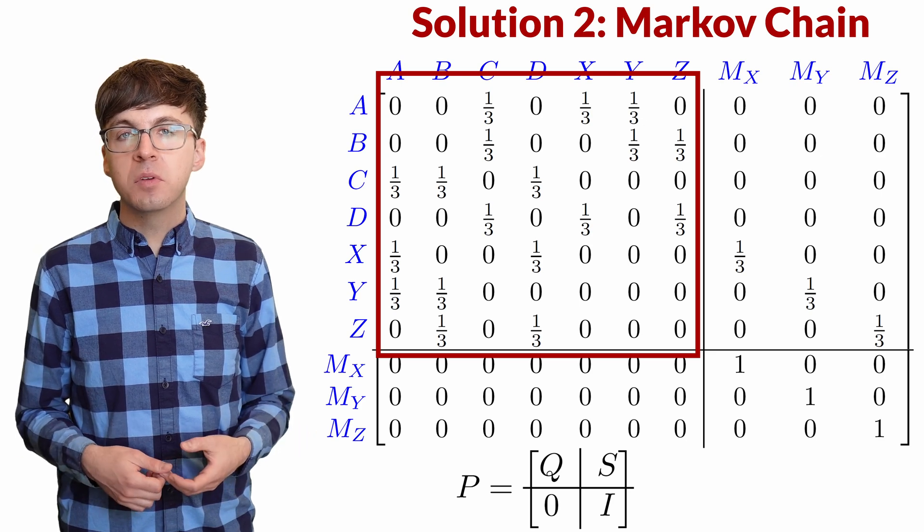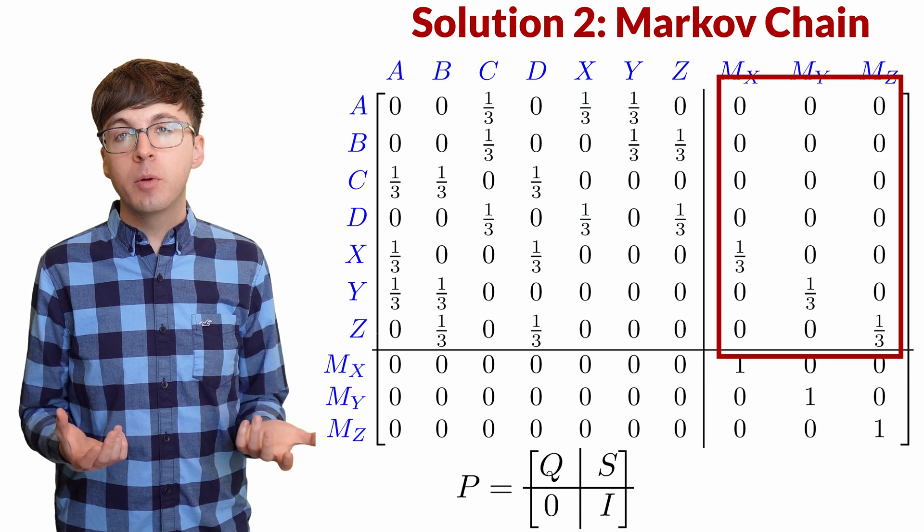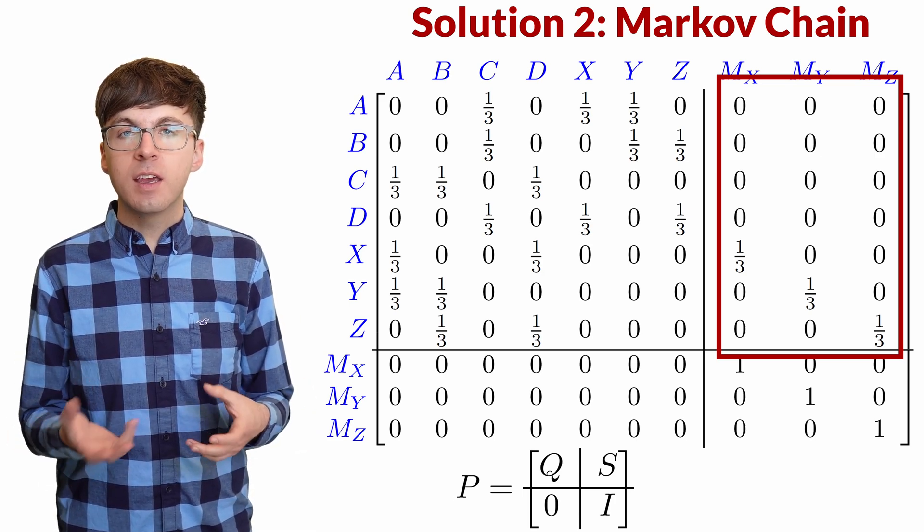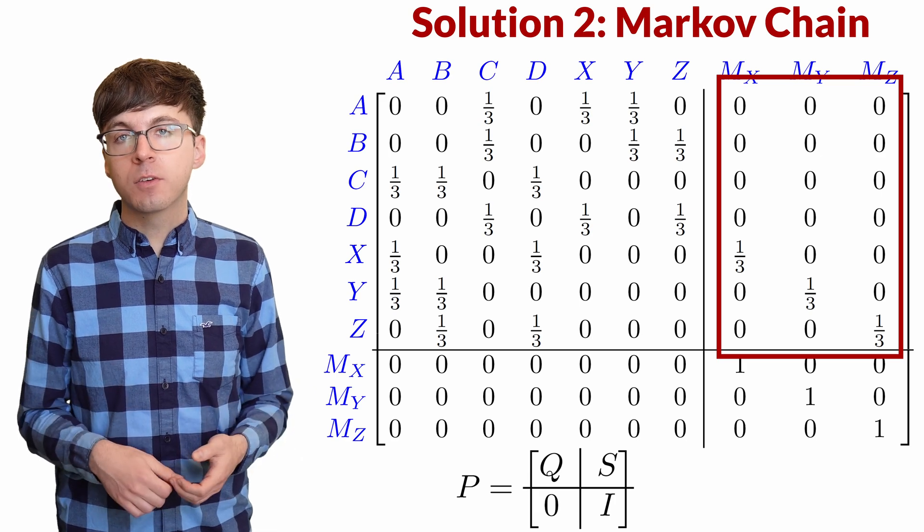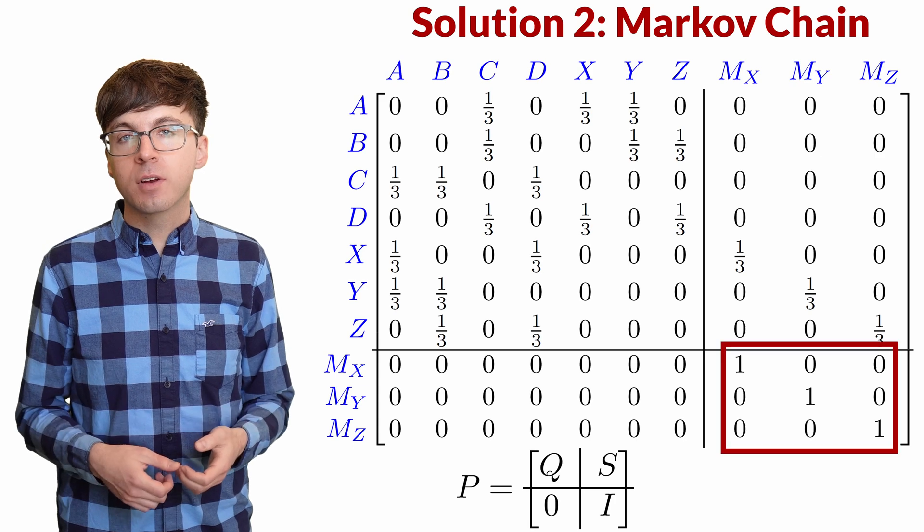The upper right portion we call S. It gives the probabilities of moving from the transient states to the absorbing states. In our case, that's feeding the monster. In the bottom are a block of zeros and an identity matrix.